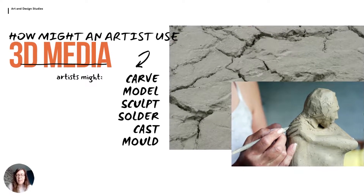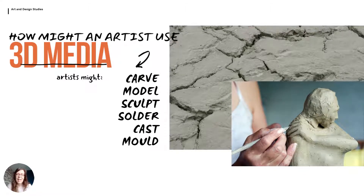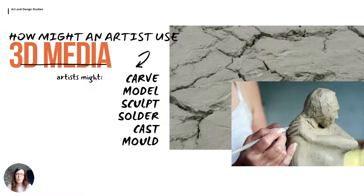Then we come to 3D media. This might be clay, bronze, or a piece of wood. Artists have different ways in which they handle the media they're using: it might be that they're carving into it and taking parts of it away, or modelling and sculpting by adding parts to create different shapes. They might be soldering to join different parts together and moulding shapes. Usually the question will tell you what media has been used, and you need to use your knowledge of these materials to think about the words and techniques that artists would have used.